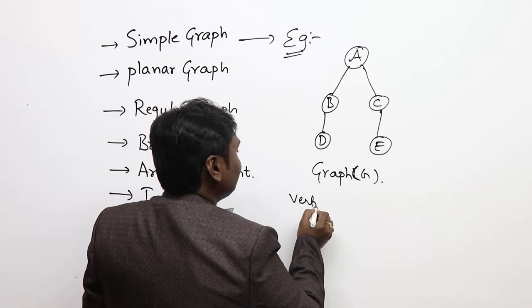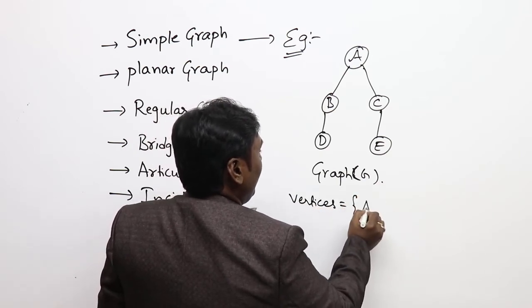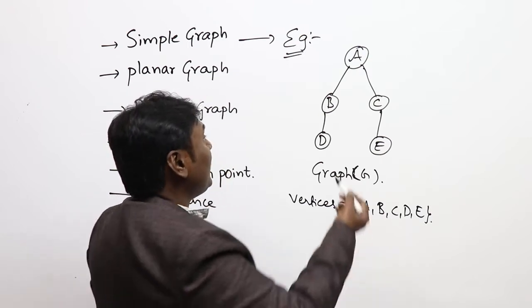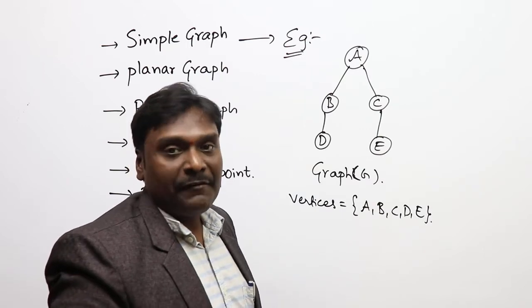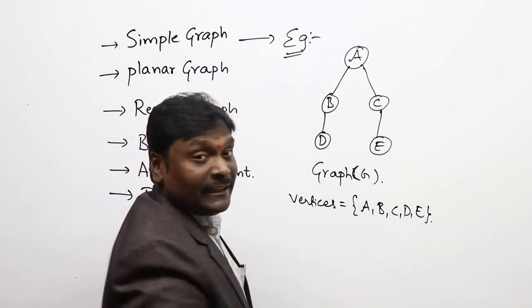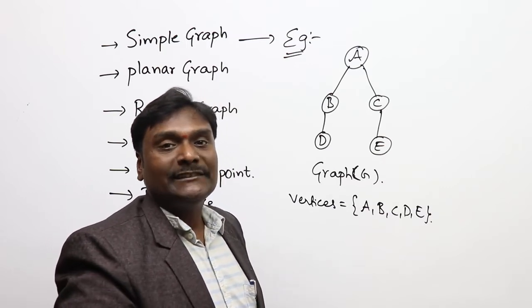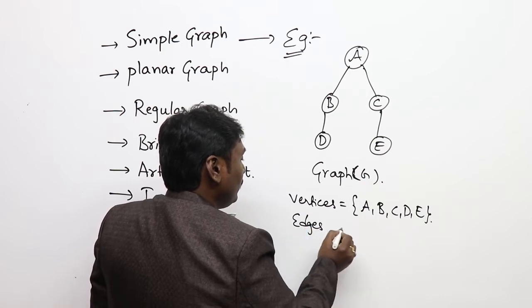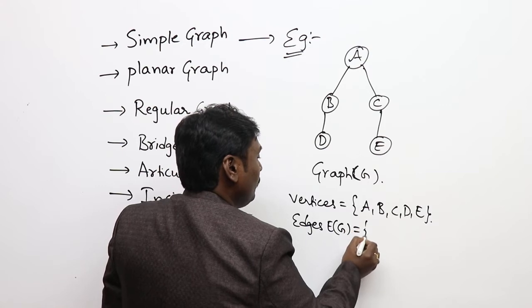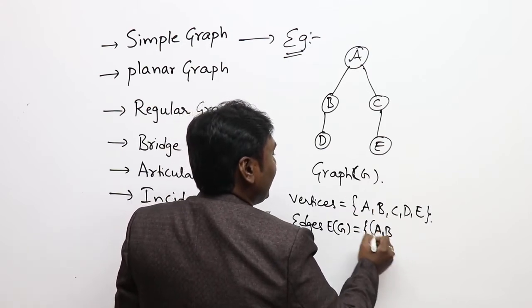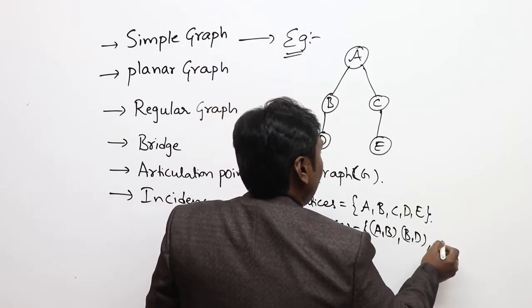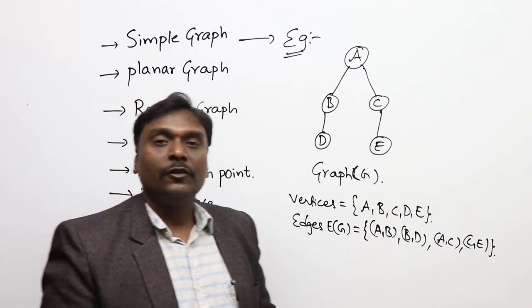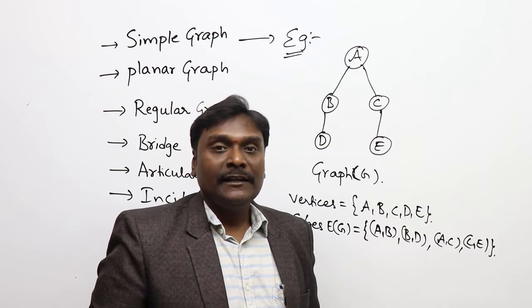The vertices of this graph are a, b, c, d, e. There are four edges: we can represent the edge set E(G) as {(a,b), (b,d), (a,c), (c,e)}. This is an example of a simple graph — without self-loops and without parallel edges.